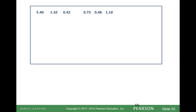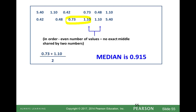Here is another data set. Notice they are not in order, so step 1 is to put them in order. We have 6 values: 6 plus 1 is 7, divided by 2 is 3.5. So our median is going to be halfway between the 3rd and 4th values — we add them and divide by 2. The median is 0.915. This shows that the median, just like the mean, doesn't have to be one of our actual data points.